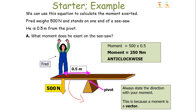Let's look at an example. Fred weighs 500 newtons and stands on one end of a seesaw. He is 0.5 metres from the pivot. What moment does he exert on the seesaw? You do moment equals force times distance: 500 times 0.5 equals 250. Add your units — newton metres — and then add your direction, because the moment is a vector. So the answer is 250 newton metres anticlockwise.